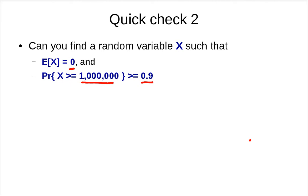Let's look at this. You want the expected value to be 0, but X equals a million with probability 0.9. What does it take to get the expected value to be zero?